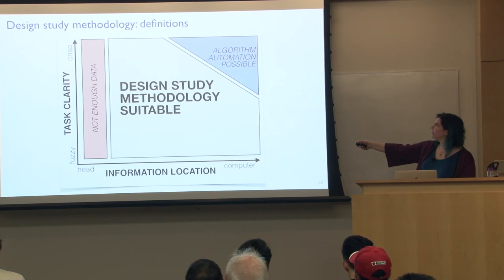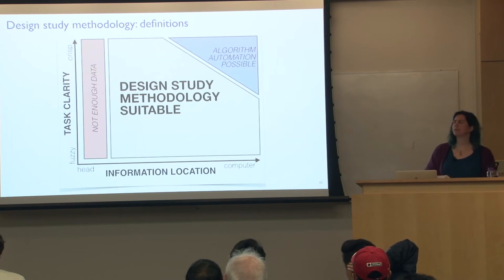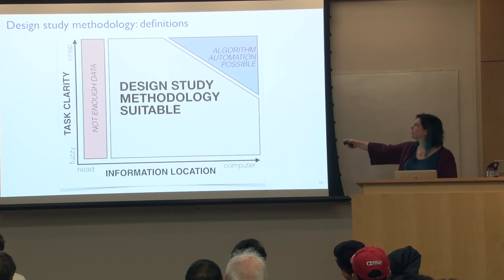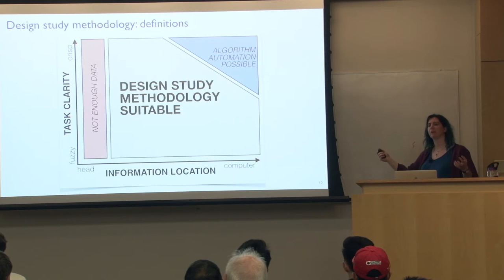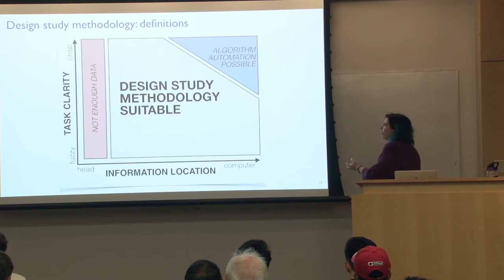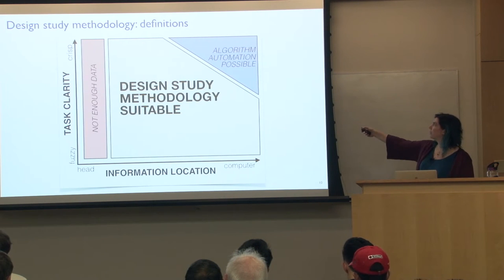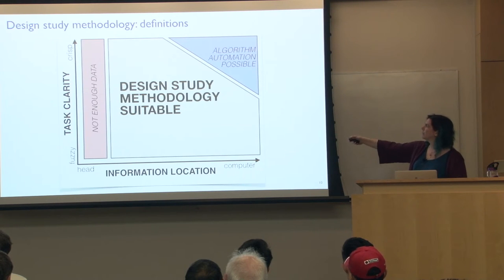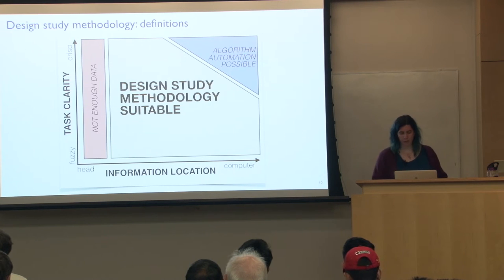If you understand everything about the task and all the data is in the computer, you could make a purely automatic decision. But there's an interesting area in between — enough data that there's hope, but not so much crispness that you could just automate it away — where this methodology tends to be particularly suitable. Sometimes we work ourselves out of a job and things become purely automated. Other times, there's quite a bit of territory in the middle where we continue even after the project is over.